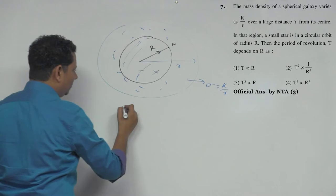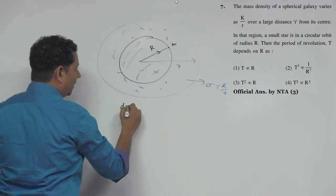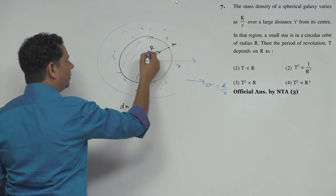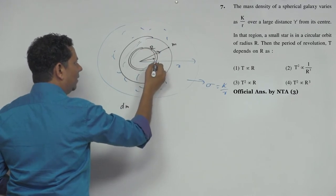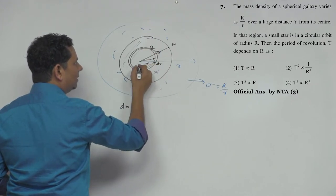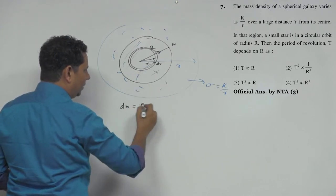We need to integrate to find the mass of this galaxy up to radius r. The density is given as k by r. The small mass element dm will be equal to ρ multiplied by dV.